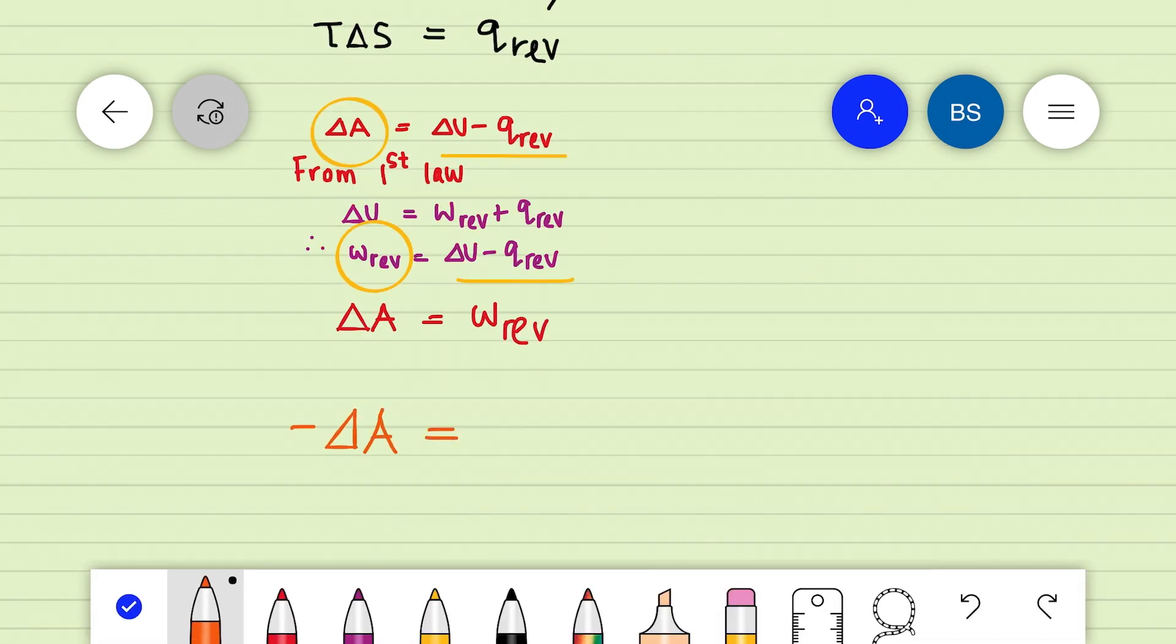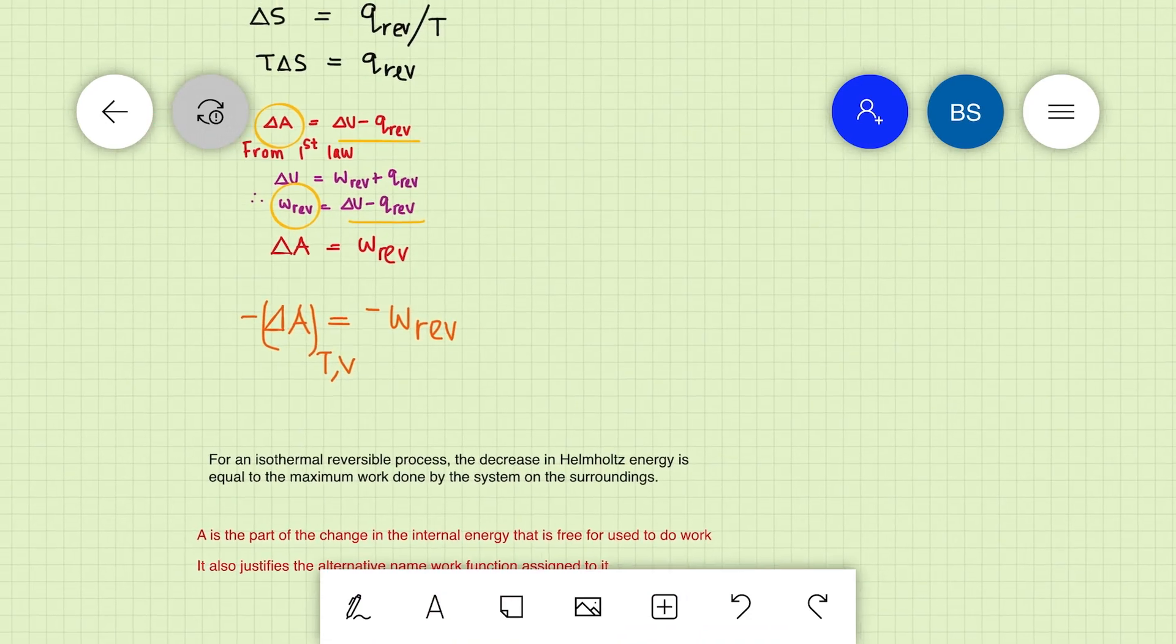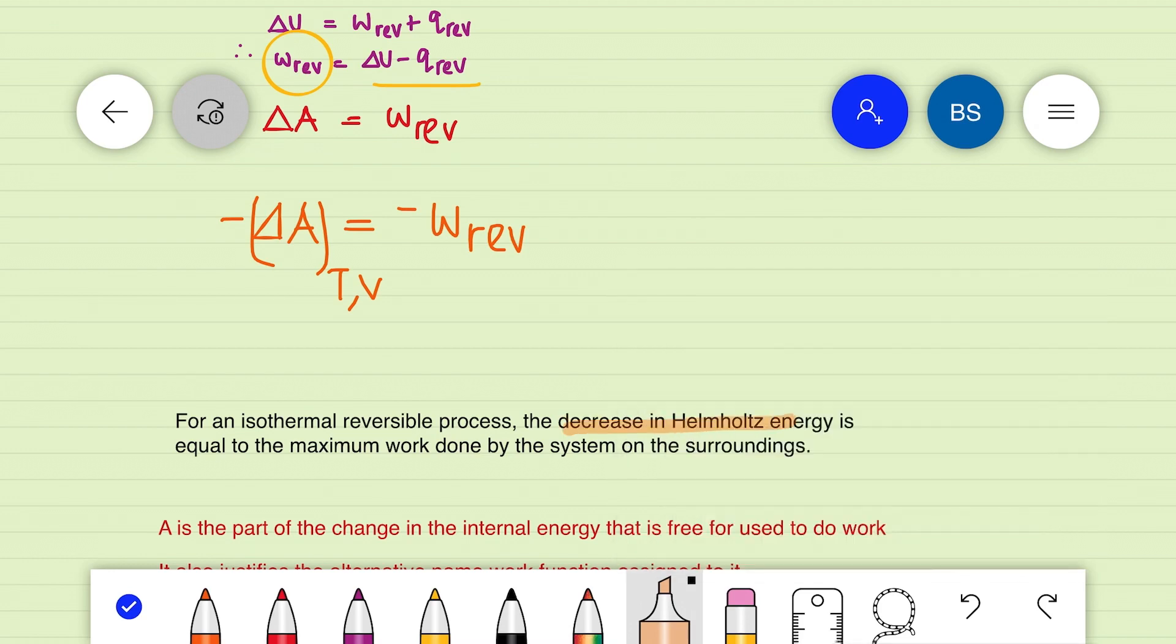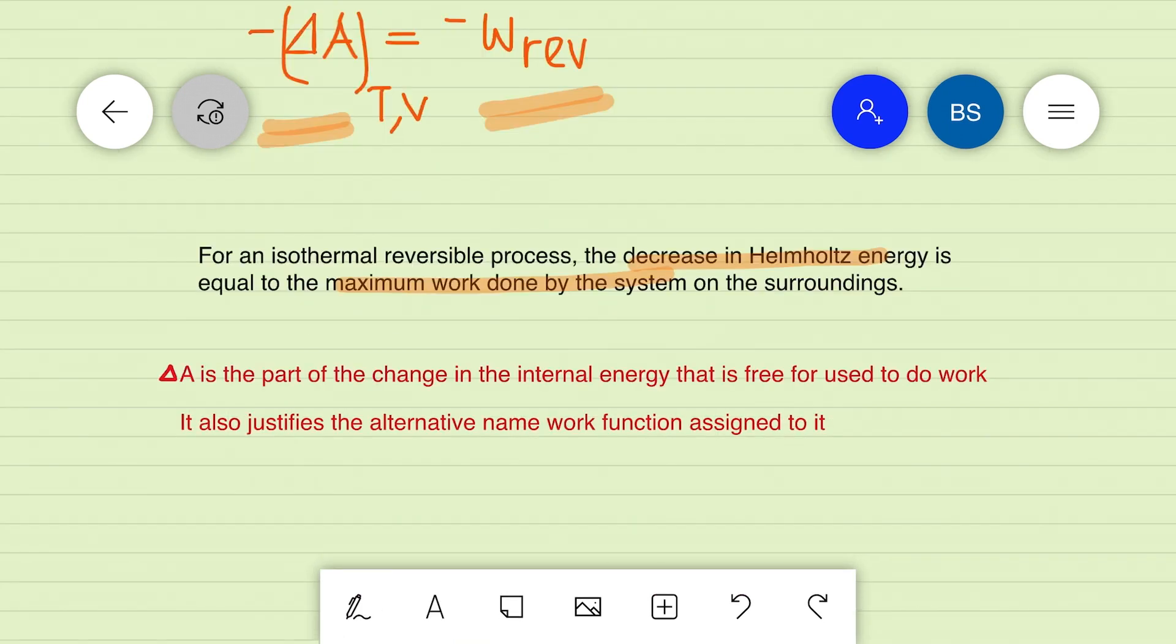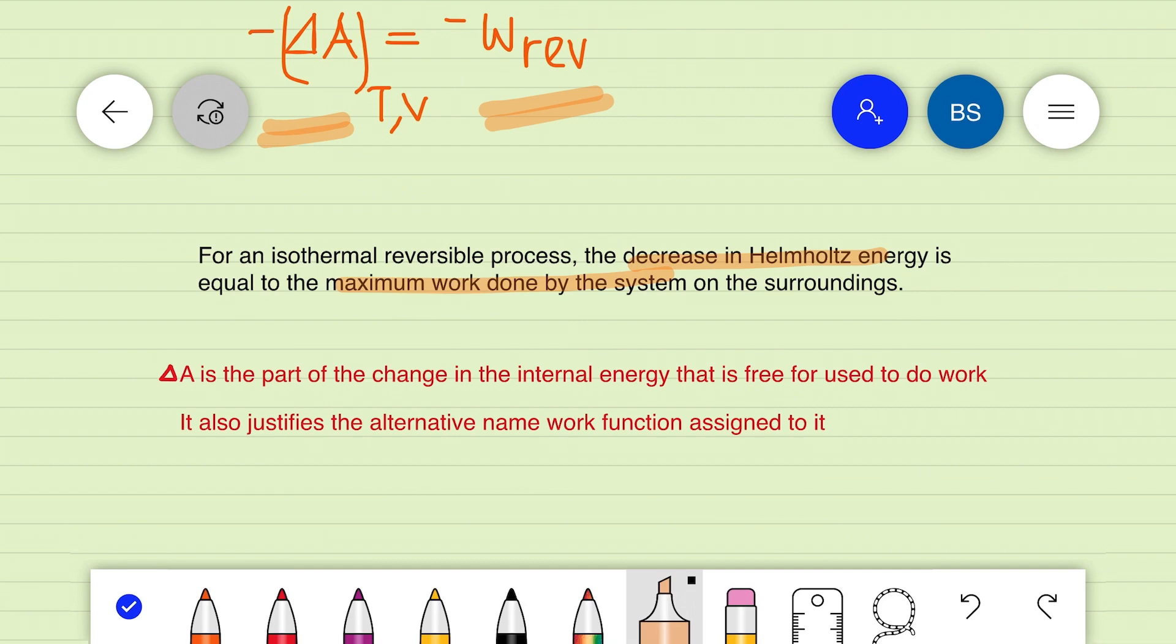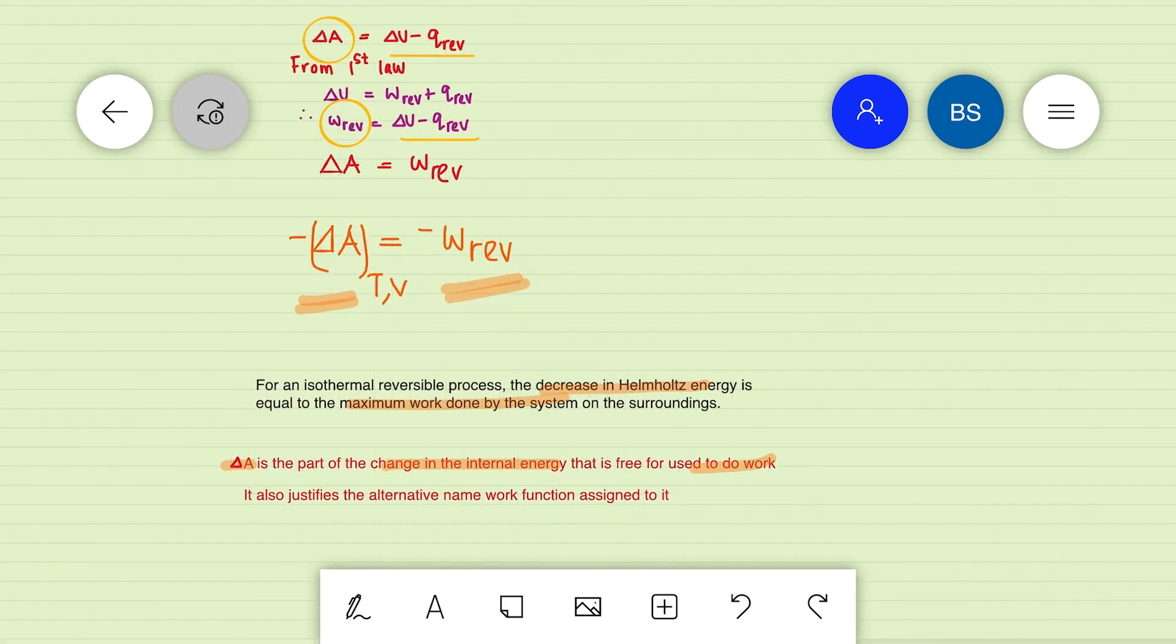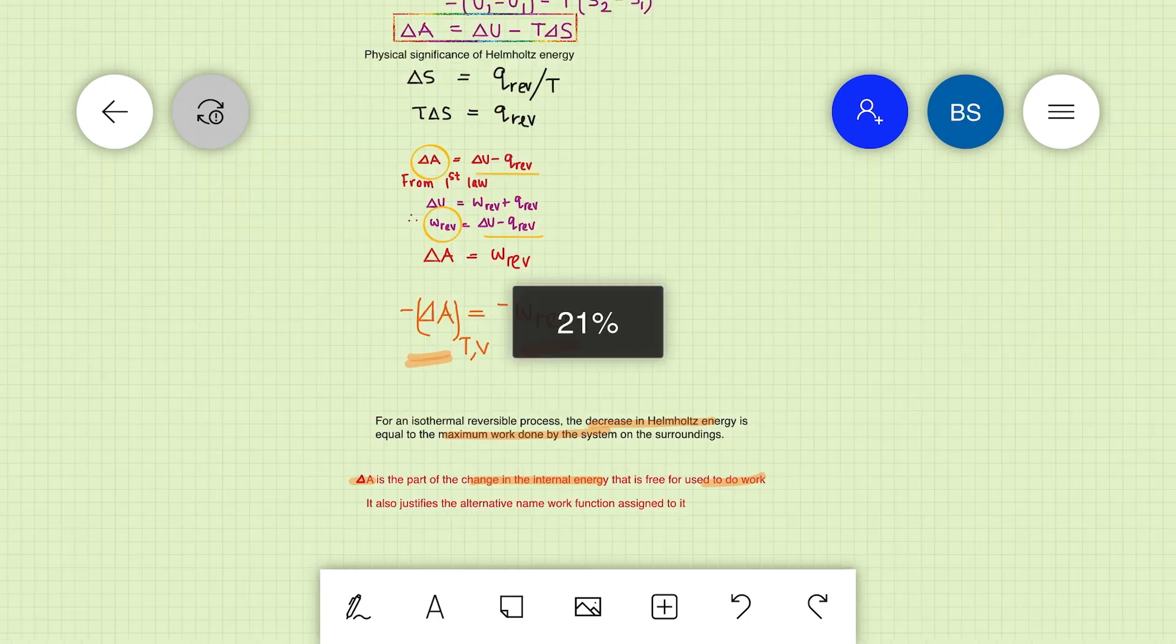If w reversible is negative—that is, if work is done by the system—then delta A will also be negative. So it follows that for an isothermal reversible process, the decrease in Helmholtz energy is equal to the maximum work done by the system on the surroundings. Simply we can say delta A is the part of the change in internal energy, delta U, that is free for use to do work. Helmholtz free energy possesses the alternative name, the work function. This is the physical significance of Helmholtz free energy.